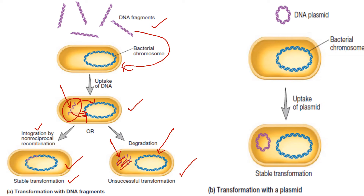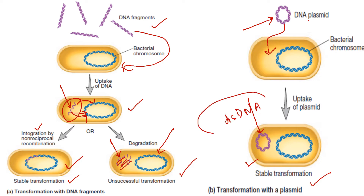The second possibility is this: if there are no DNA fragments but a complete DNA plasmid, it can shift itself into the bacterial cell, and this is also known as stable transformation. Why? Because this plasmid, which is also double-stranded extra-chromosomal DNA, is already double-stranded, so it cannot be cut down by the enzymes of the bacterial cell.